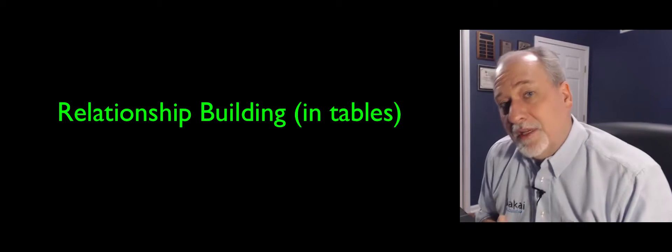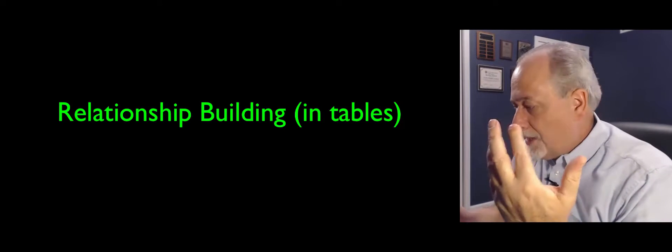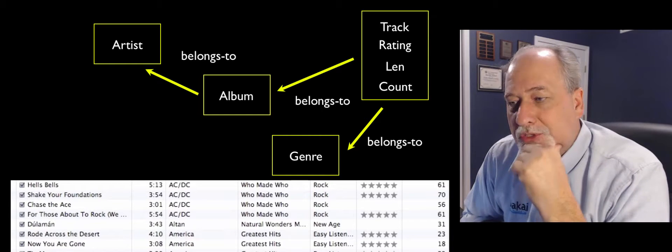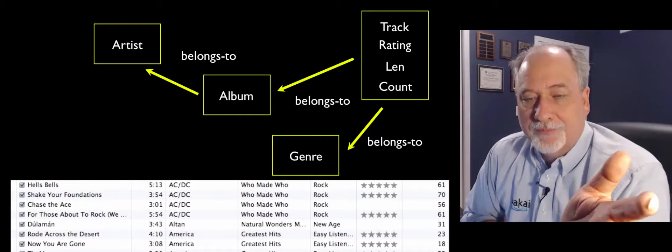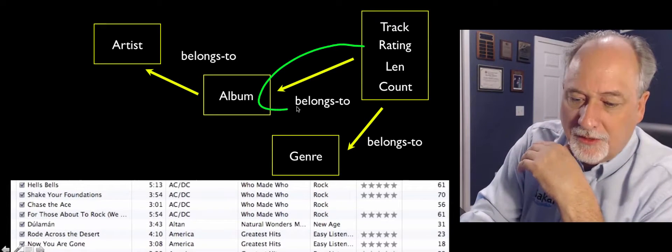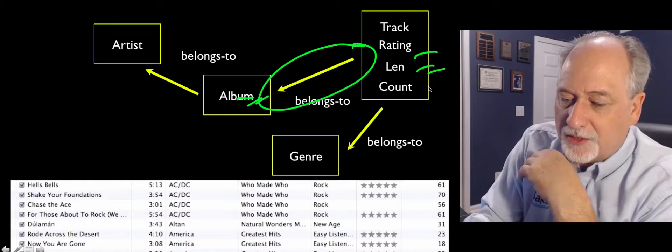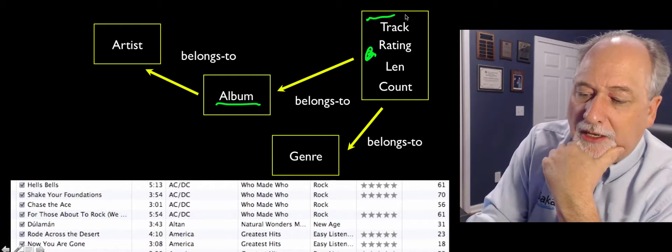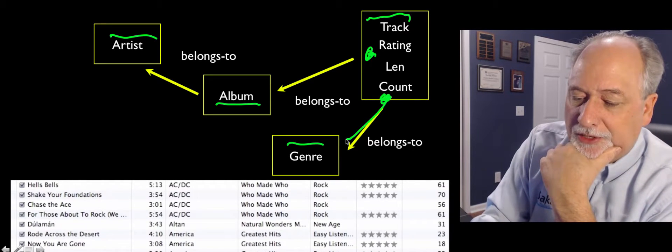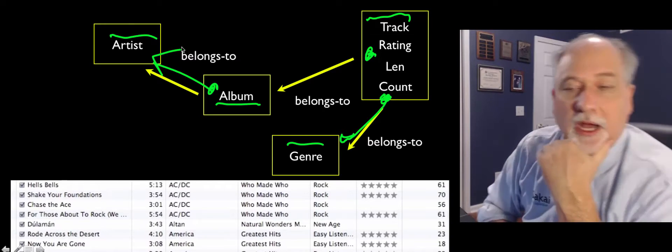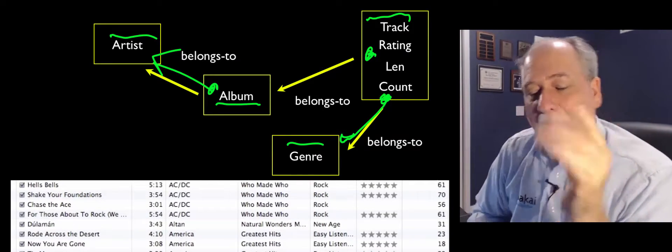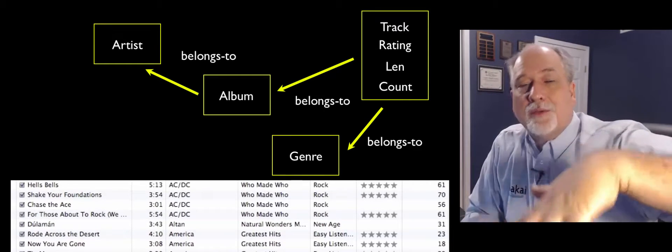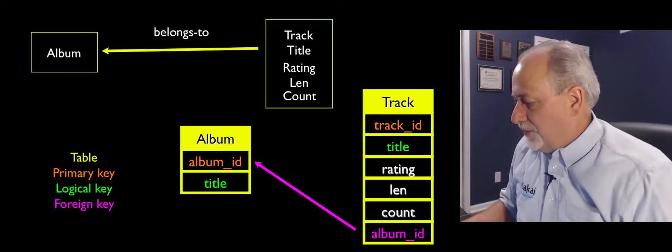So now we have this concept of primary key, logical key, and foreign key. And so what we want to do is we want to take our picture and we want to turn it into tables. So we have to add some bookkeeping columns, some columns that are there just for the purpose of bookkeeping. And we have to model these arrows, which means we've got to put a few extra things here and a few extra things here. We need to add bookkeeping columns. They're not the data. The data is like rating, length, count, title of the album, title of the track. That's the actual data. These keys that we're going to add to these things are just to model the relationships between them.